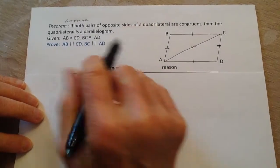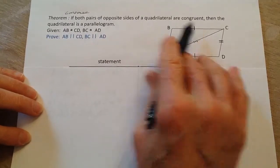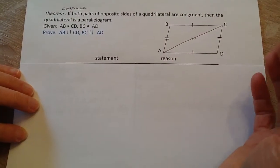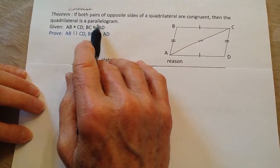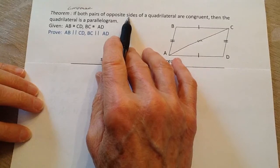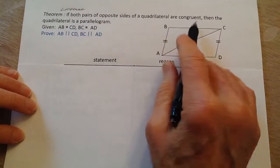Today we're going to talk about the converse of the theorem. Remember we had a theorem earlier where if we had a parallelogram, then the opposite sides are congruent. The converse of that is if the opposite sides of a quadrilateral are congruent...